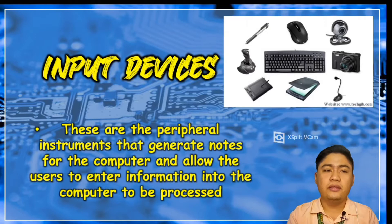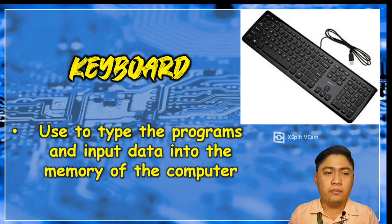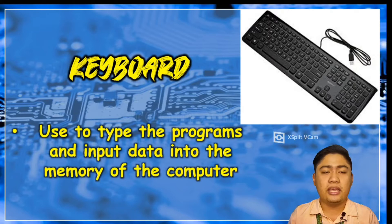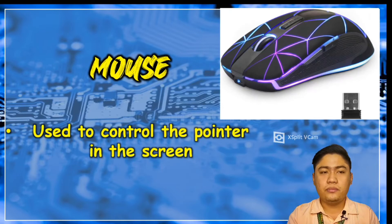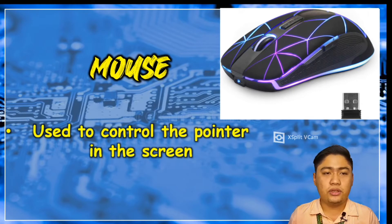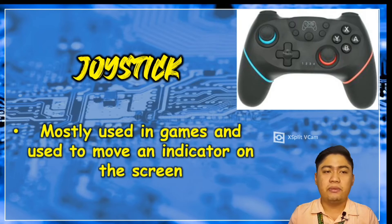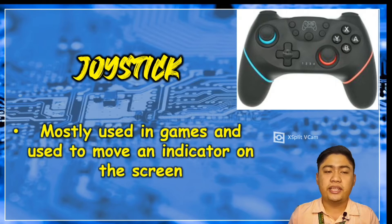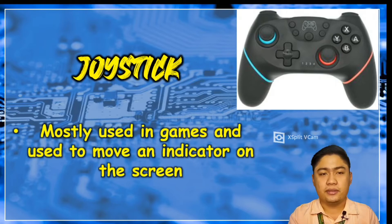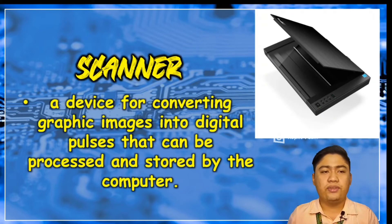The keyboard is used to type programs and input data into the memory of the computer. The mouse is used to control the pointer on the screen. The joystick is mostly used in games and is used to move an indicator on the screen.